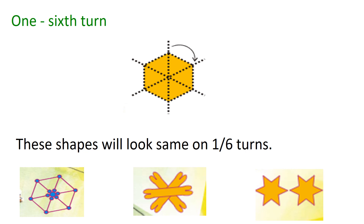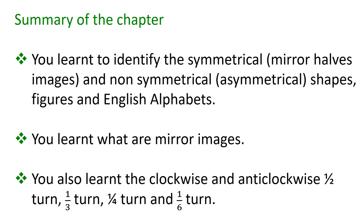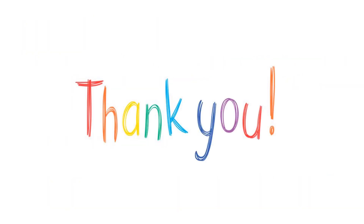You can see three examples given here. In this chapter, you learned to identify the symmetrical — that is mirror halves, images — and non-symmetrical, that is asymmetrical shapes, figures and English alphabets. You learned what are mirror images. Finally, you learned the clockwise and anticlockwise half turn, one third turn, quarter turn, and one sixth turn. Children, we have come to the end of this chapter. Learn what was taught in these three sessions. Try to do all the practice questions on your own. Revise thoroughly. Take care and bye.